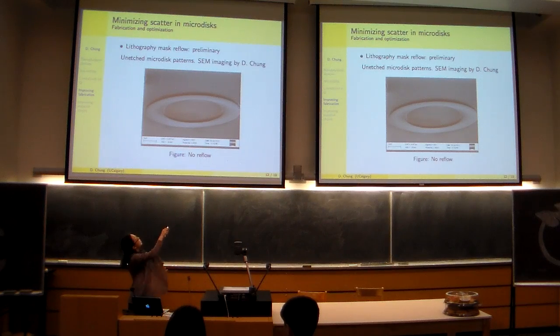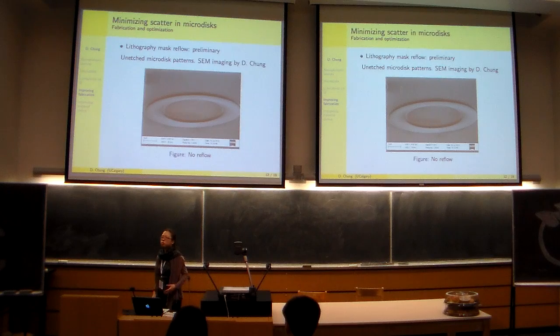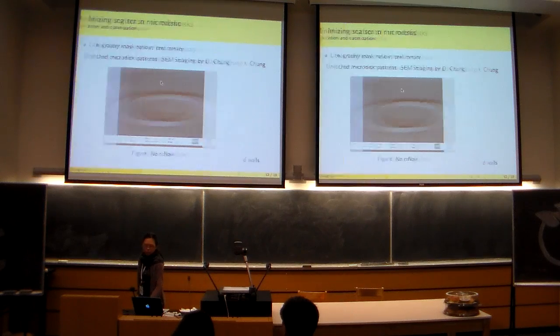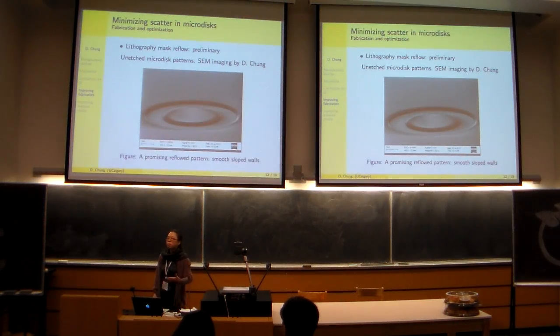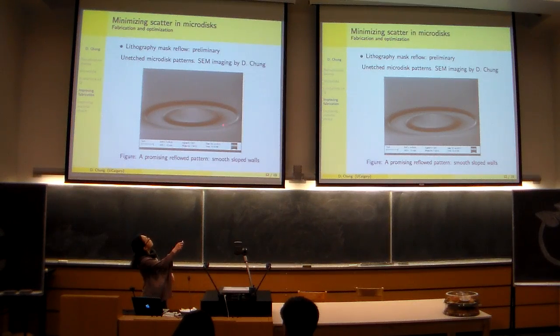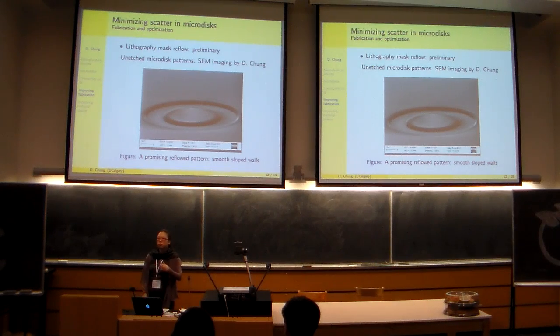The problem is that when I write this pattern, there's roughness in the line of the pattern. And this is transferred into roughness in the etching of my discs. So what I can do is I can warm up my resist so that the edges of the patterns smooth out. And this transfers into a more smoothly etched disc.